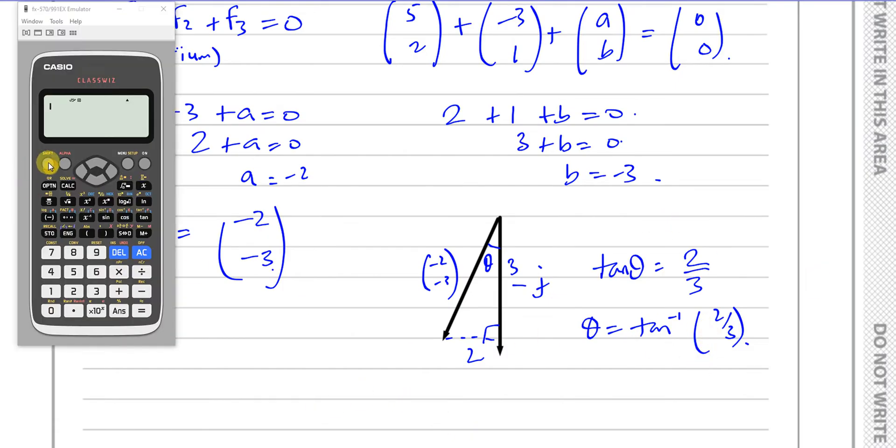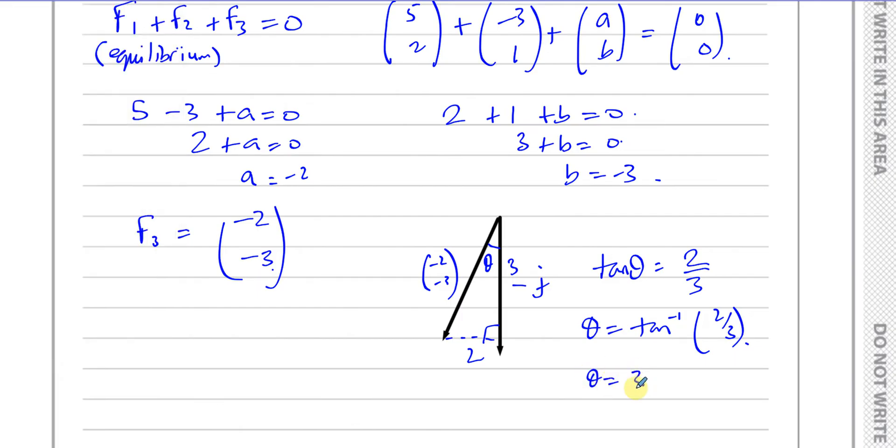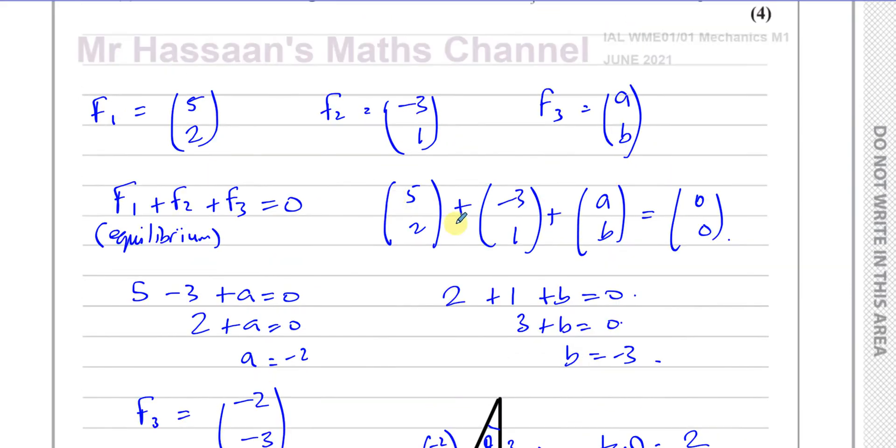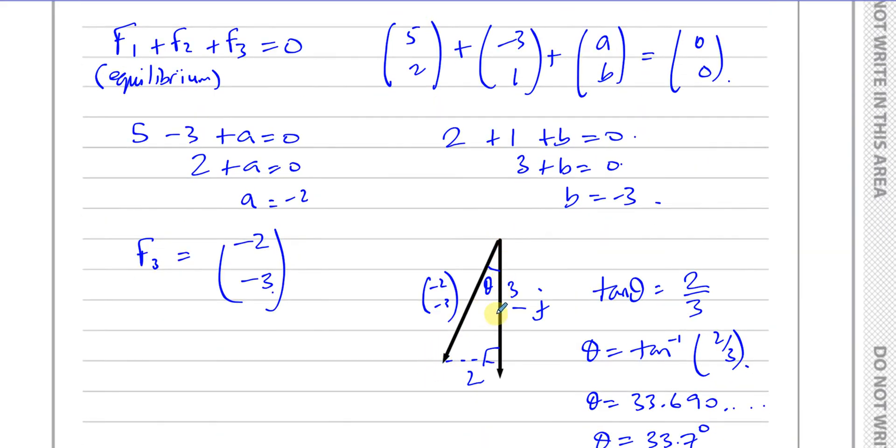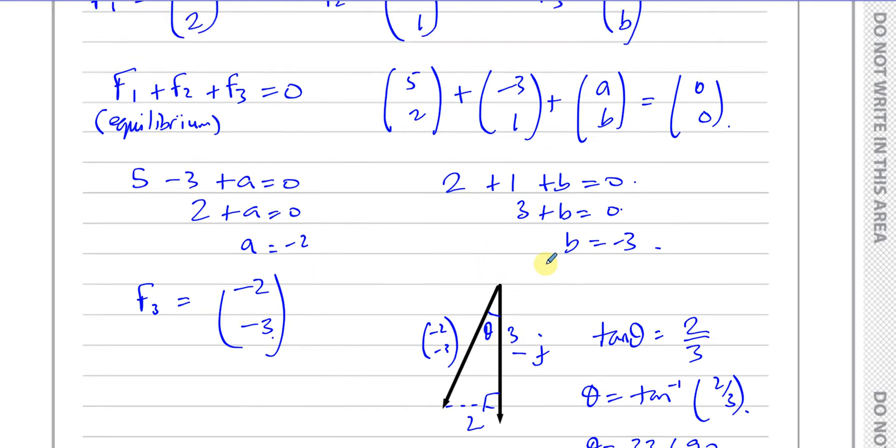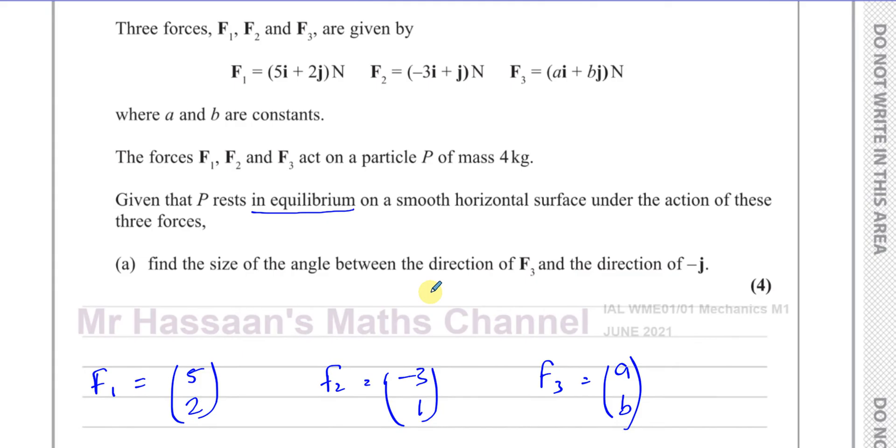So inverse tan in degree mode of 2 over 3, and that will give us our angle, which is 33.69 degrees. So I'm going to write it to one decimal place, which is 33.7 degrees. And that's the answer. It's not asking us for a bearing or anything like that. It's asking us for the angle between this vector and negative j. That's the answer for 3 part A.